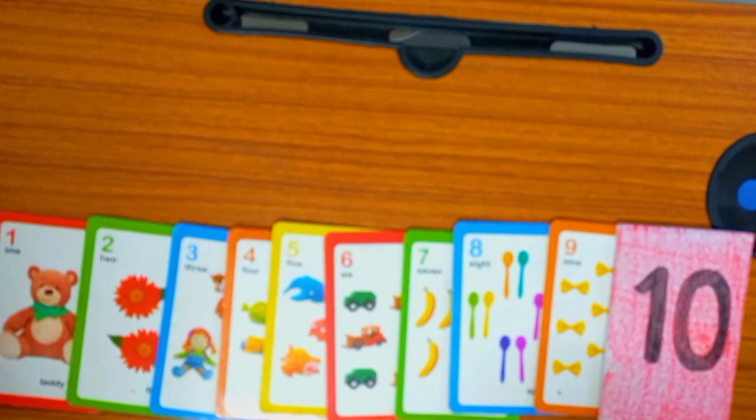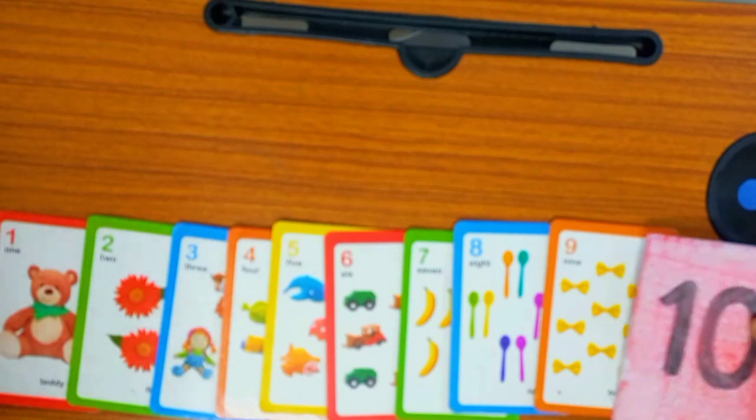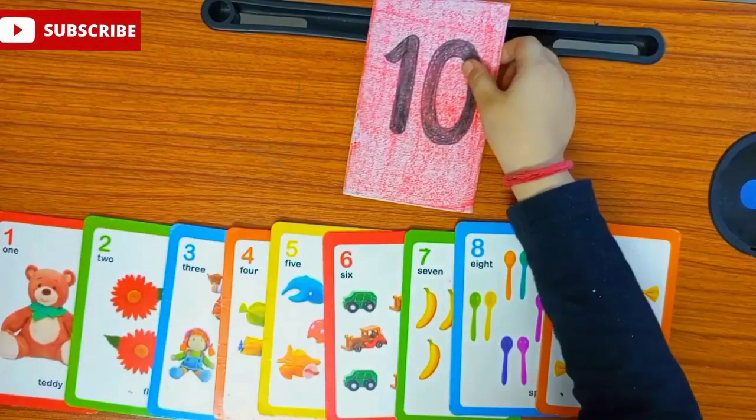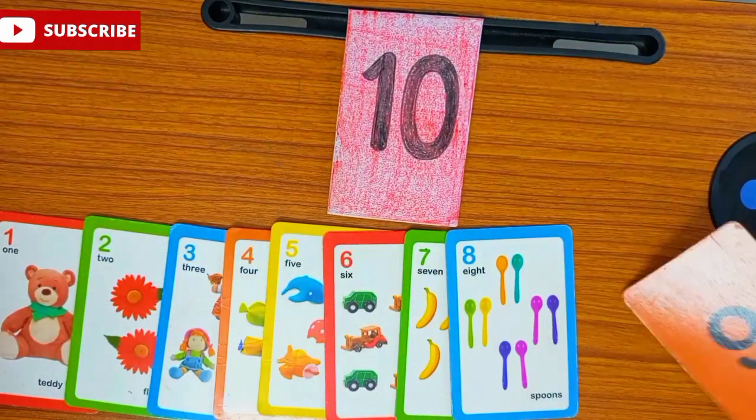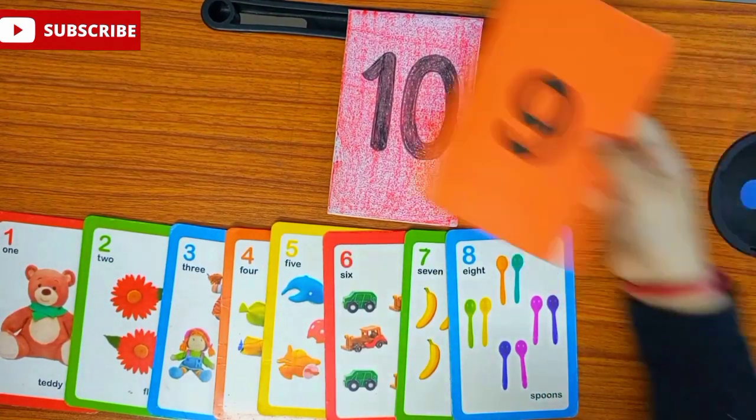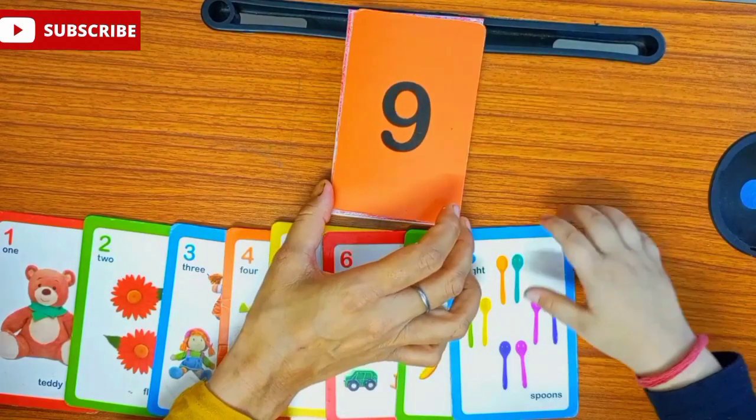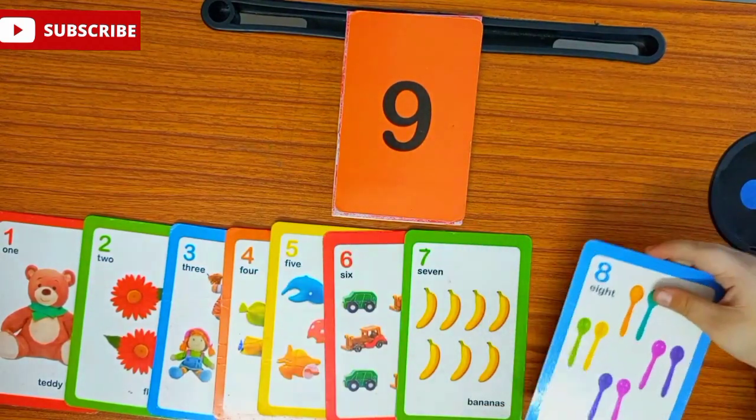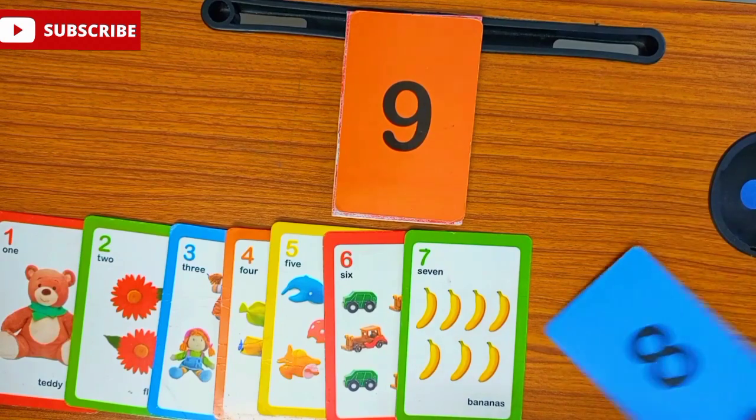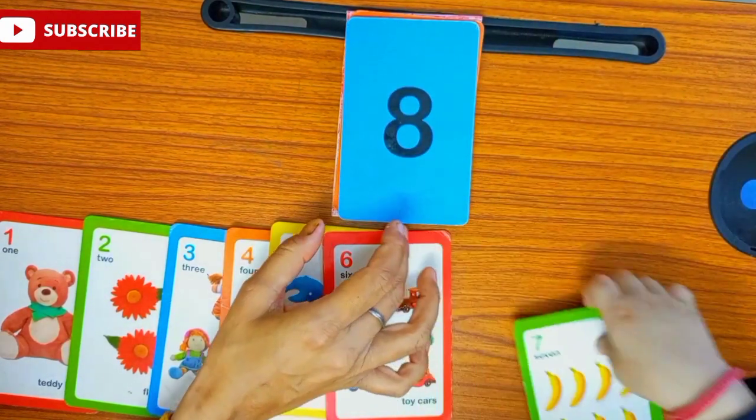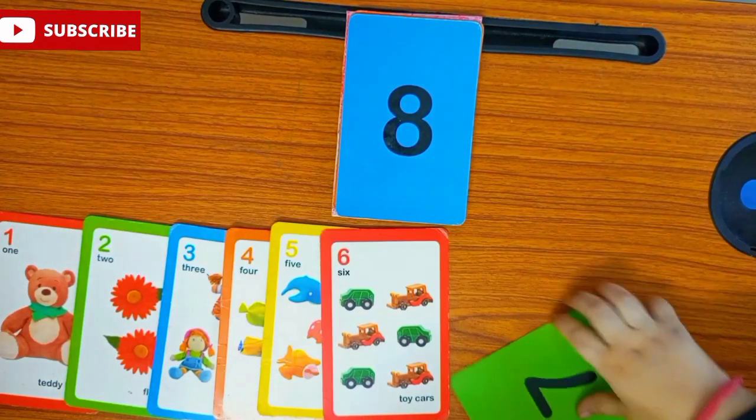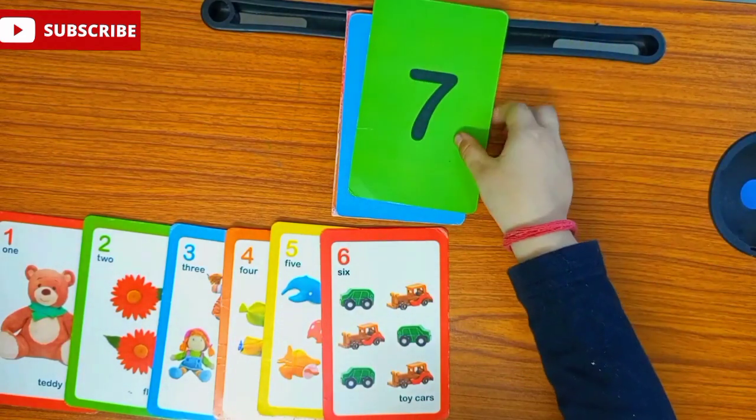Now, you have to arrange these cards according to reverse counting. Which number will come first, Arav? 10. Number 10. Put it here. Very good. Then? Number 9. Very good. Number 8. Good. Number 7.